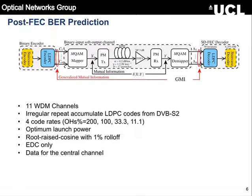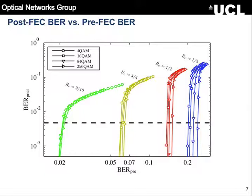We ran some simulations to show that you can do better. It's a single span system, 11 WDM channels, LDPC codes. We looked at four different code rates and different modulation formats. We know what happens with post-FEC BR — these are the simulation results for this particular code in a WDM system. You see this spread, so the fact that these are not on top of each other means that the post-FEC BR cannot be predicted using pre-FEC BR.